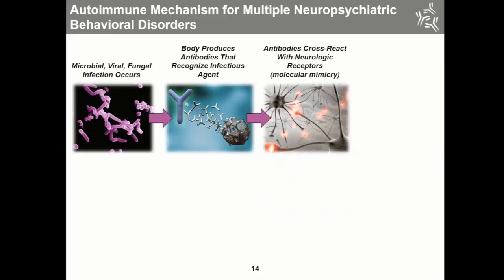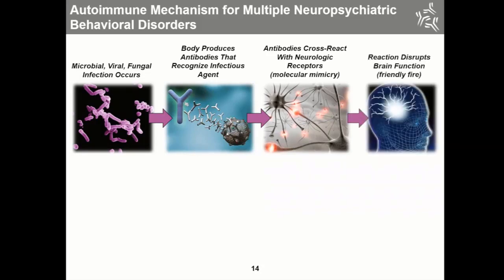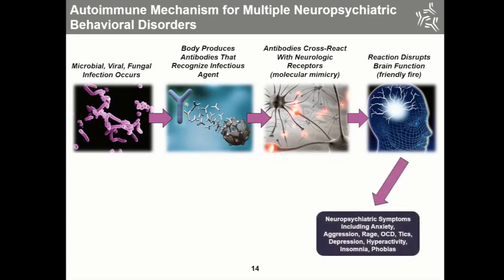This is a process we call molecular mimicry, or in some cases better known as 'friendly fire' in wartime. These antibodies and different types of immune components will attack the brain and different parts of the brain, producing these different types of heterogeneous neuropsychiatric symptoms.